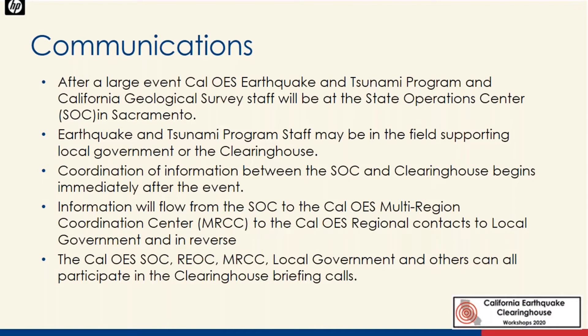The Seismic Hazards Branch in the State Operations Center ensures that clearinghouse information is provided to everyone in the SOC as well as other state and federal agencies from the beginning of the event. The earthquake program duty officer also distributes clearinghouse information weekly to duty officers and executive duty officers throughout the state. Clearinghouse information is also included in all SOC situation status reports for each operational period.